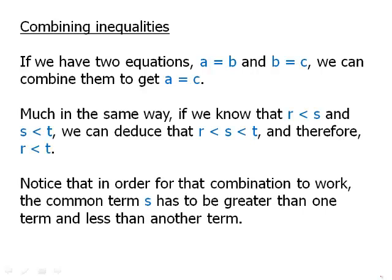Much in the same way, if we know that r is less than s and s is less than t, we can deduce that r is less than s is less than t, and therefore r is less than t. So that is also a transitive property. Notice that in order for the combination to work, the common term s has to be greater than one term and less than the other term, and that's very important.